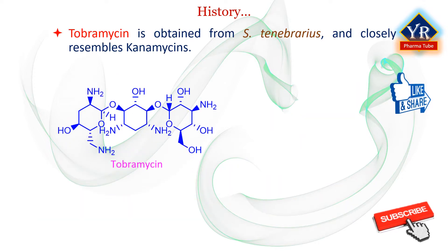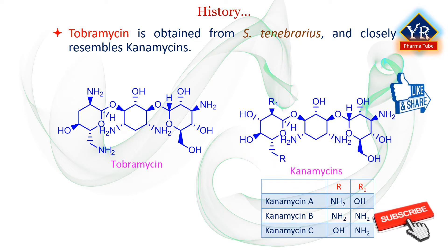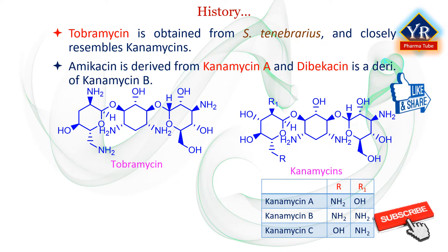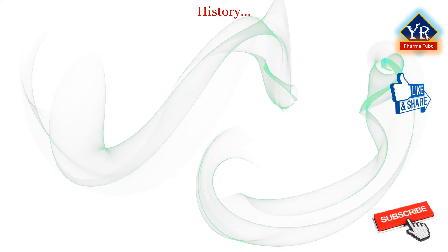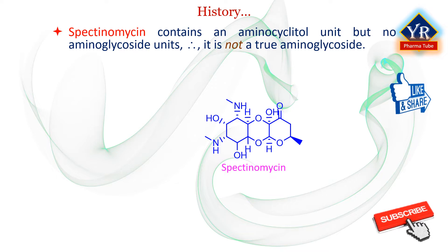Tobramycin is an important aminoglycoside obtained from Streptomyces tenebrarius and most closely resembles the kanamycins in structure. Other additions to the aminoglycoside family of antibacterials have included semisynthetic congeners belonging to the kanamycin subset. Amikacin is derived from kanamycin A and dibecacin is a congener of kanamycin B. These compounds contain replacements of the key functional groups that are susceptible to enzymatic deactivation by bacterial enzymes. Accordingly, amikacin and dibecacin offer activity against organisms resistant to older conventional aminoglycosides, i.e., kanamycin. A notable anomaly within the antibacterial aminoglycoside family is streptomycin, which contains an aminocyclitol moiety but no aminoglycoside unit, and so by definition this compound is not a true aminoglycoside.